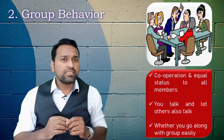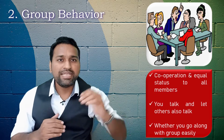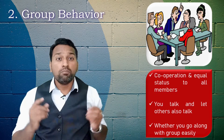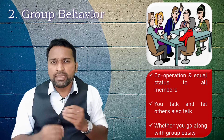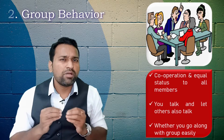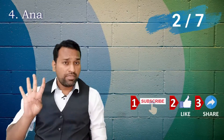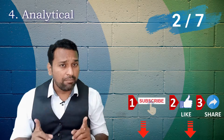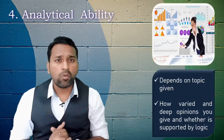The next aspect is whether you go along with the group easily. Most people who are introverts experience some uneasiness when they are in a group. The fourth parameter is analytical ability, and it depends on the type of topic given.